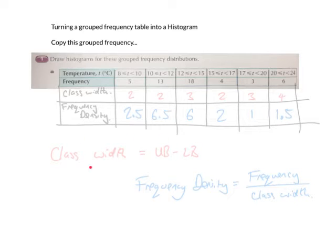You need to know two equations. You need to know that you need to add two more rows to your table. And you need to fill out that table starting with class width first and then frequency density after that. Once you've got that written out, we're ready to move on.